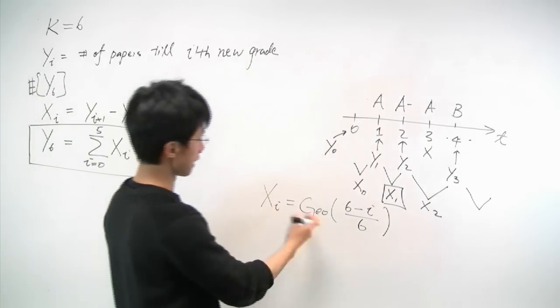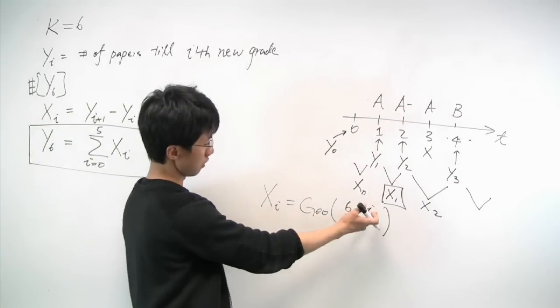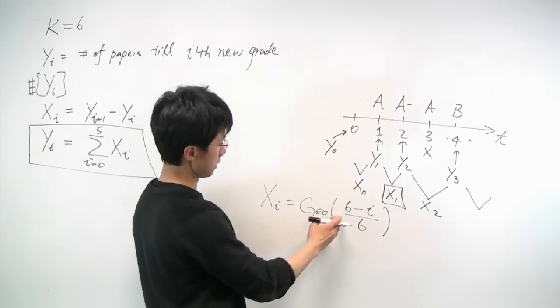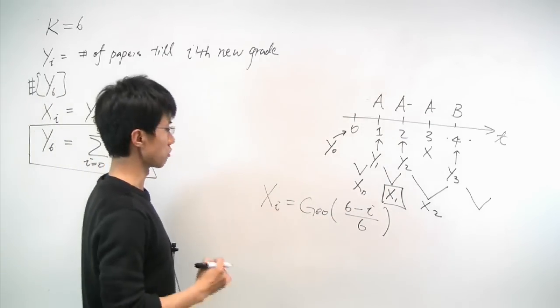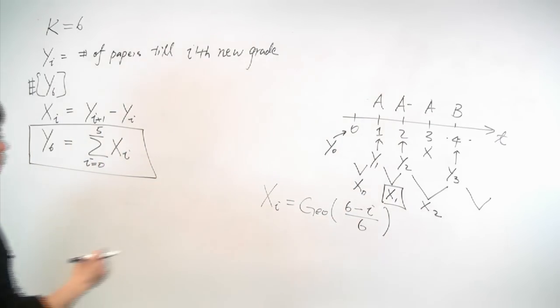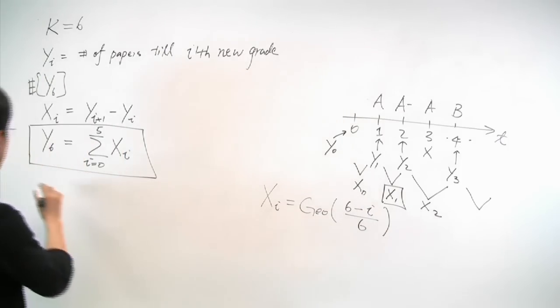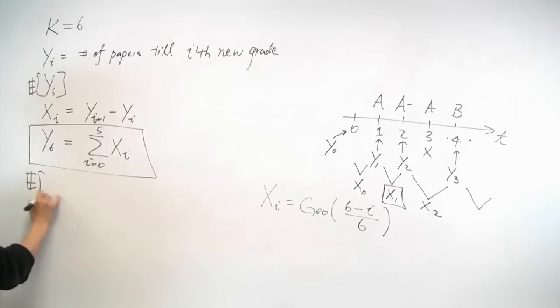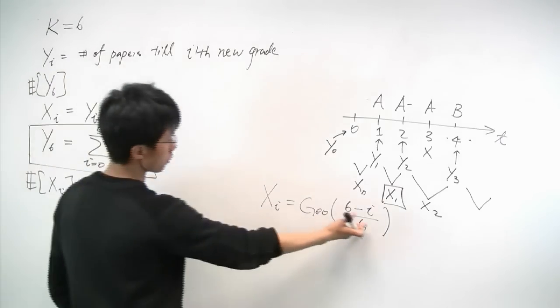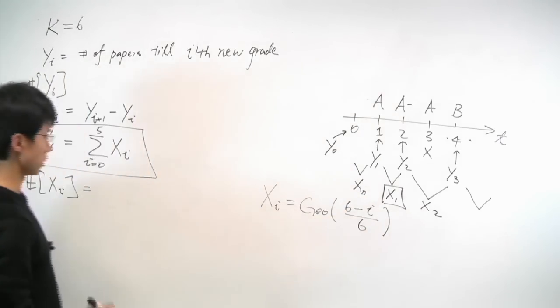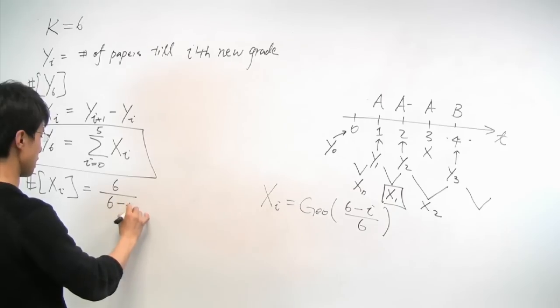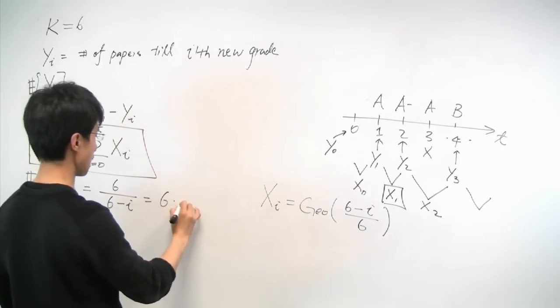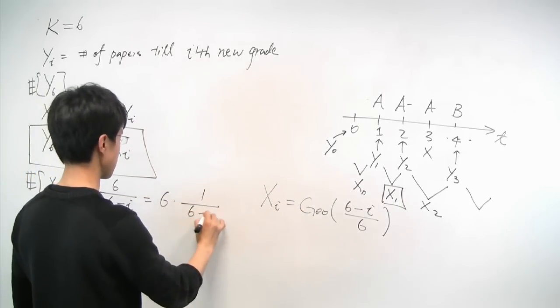And this is due to the fact that so far, we have already seen i new grades, and that will be the success probability of seeing a further new grade. So from this expression, we know that the expected value of xi will simply be the inverse of the parameter of the geometric distribution, which is 6 over (6-i), or 6 times 1 over (6-i).